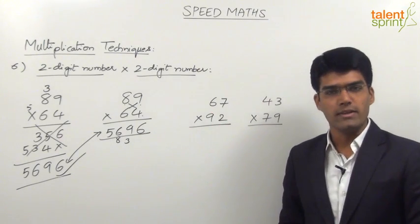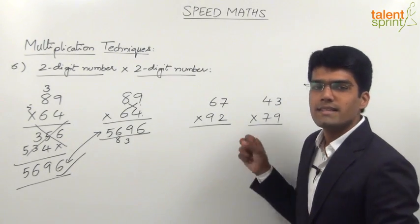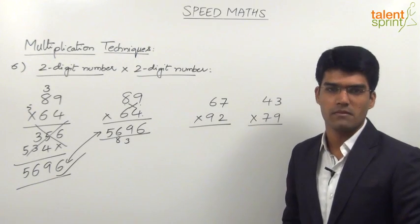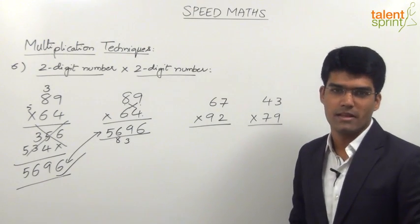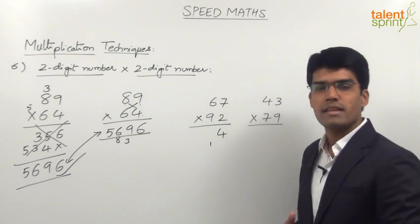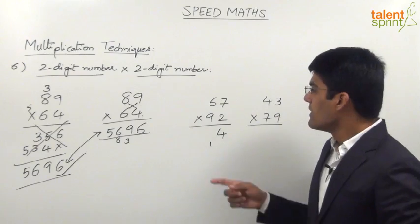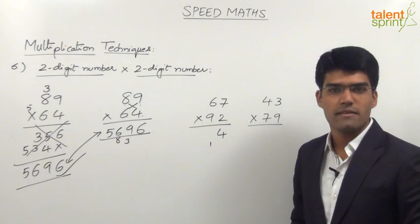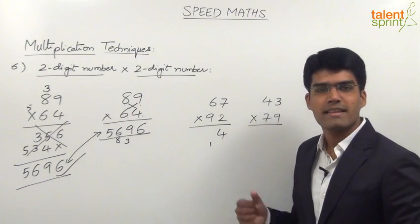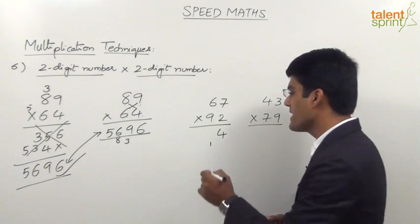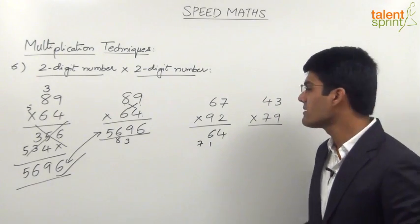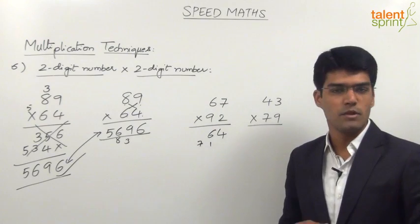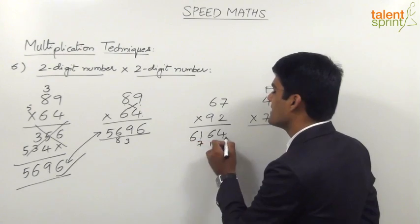Let's take another example: 67 into 92. Split and merge will be a little difficult here and no other special condition is applicable. First step: multiply both units places, 7 into 2 is 14. Write 4 in the answer and 1 is carried forward. Second step, cross multiplication: 6 into 2 is 12, 9 into 7 is 63. 12 plus 63 is 75. 75 plus 1 carry is 76. So 6 in the answer and 7 gets carried forward. Last step, tens places: 6 into 9 is 54. 54 plus 7 carry is 61. So the answer is 6164.